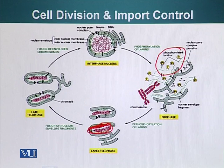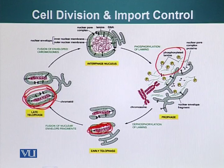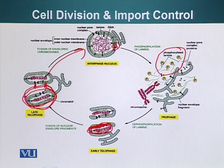Basically, we have individual chromosomes which are wrapped, first of all, with lamins, and then the lamins bring in and stick to the nuclear membrane. These structures then fuse together and again form the normal nucleus, which has nuclear pores, as we know.